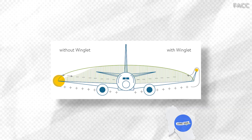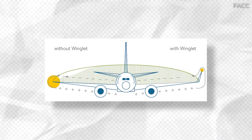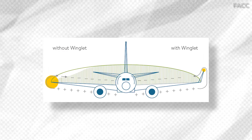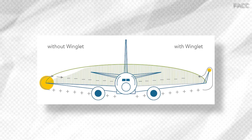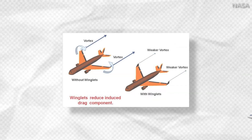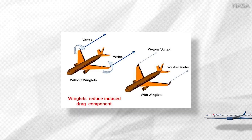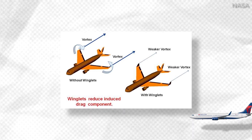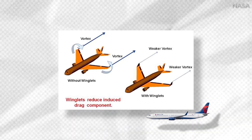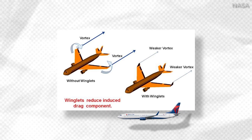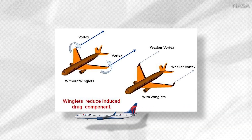The larger the vortices, the more drag is created, slowing the aircraft down. As the plane slows down, the engines need to burn more fuel to maintain speed, costing the airline more money to operate. Thus, airlines and aircraft manufacturers are motivated to modify wingtips in such a way as to reduce the size of generated vortices.